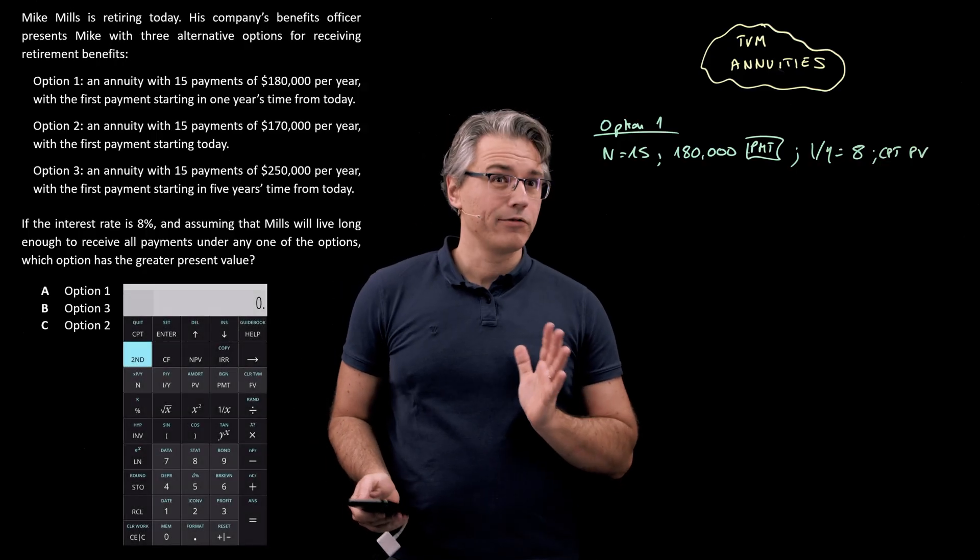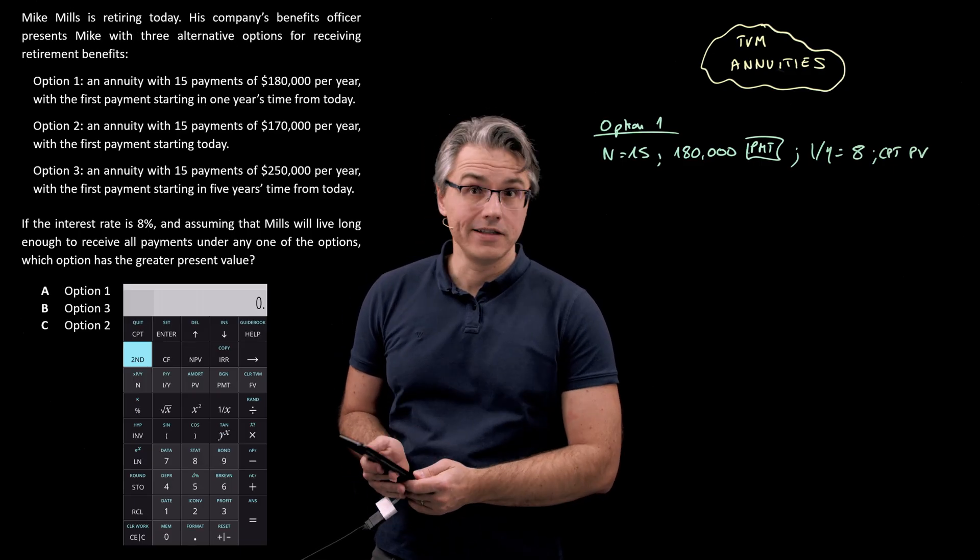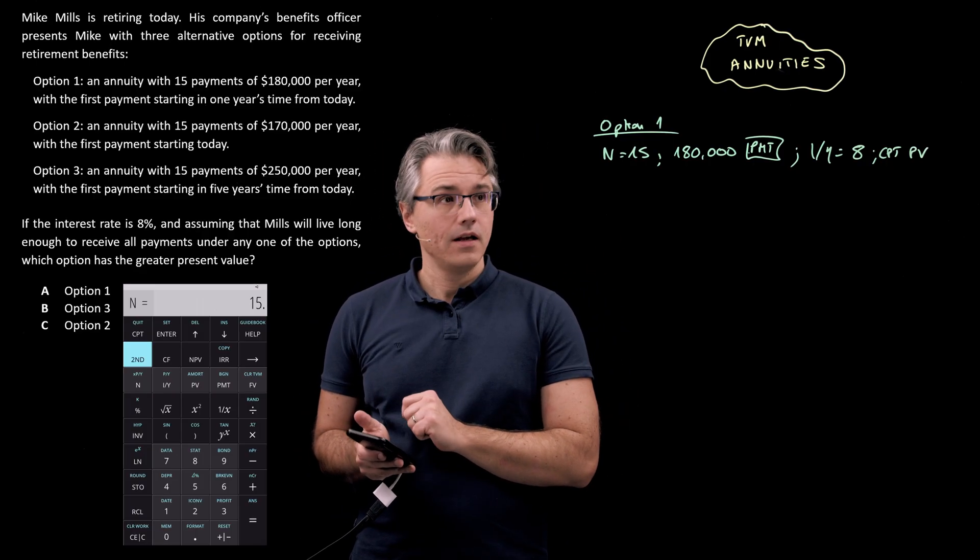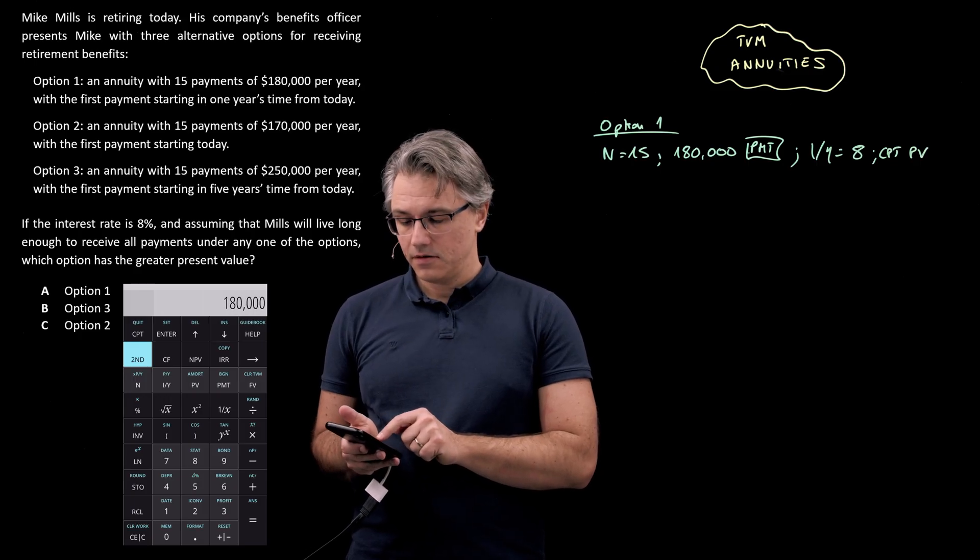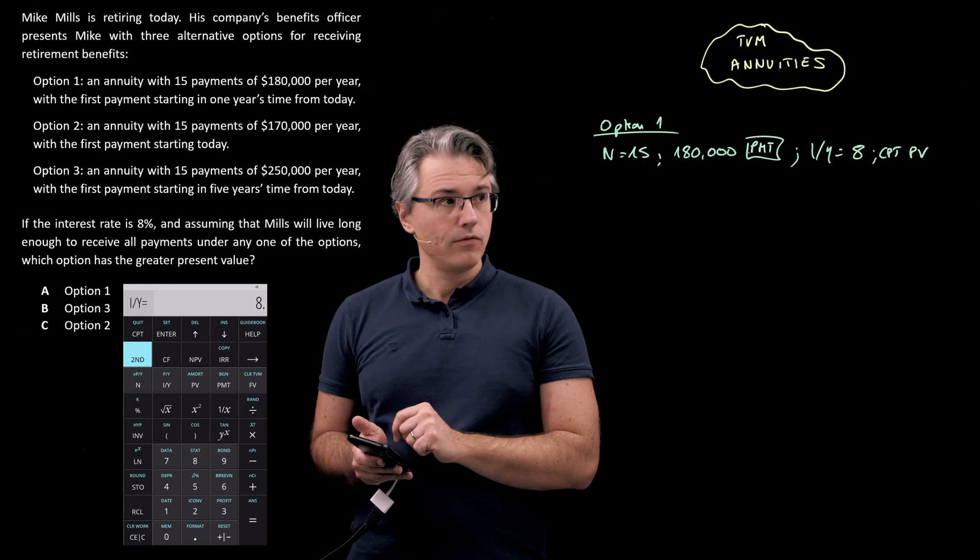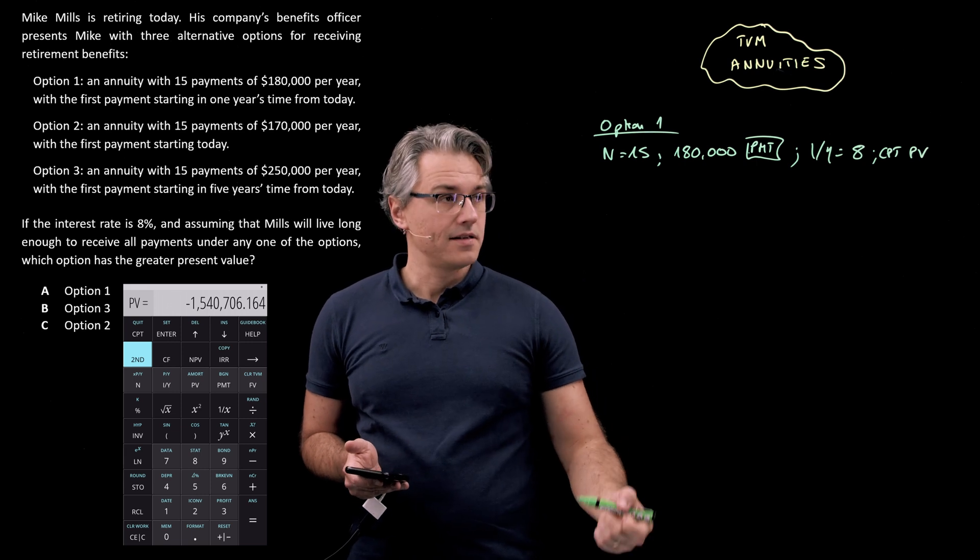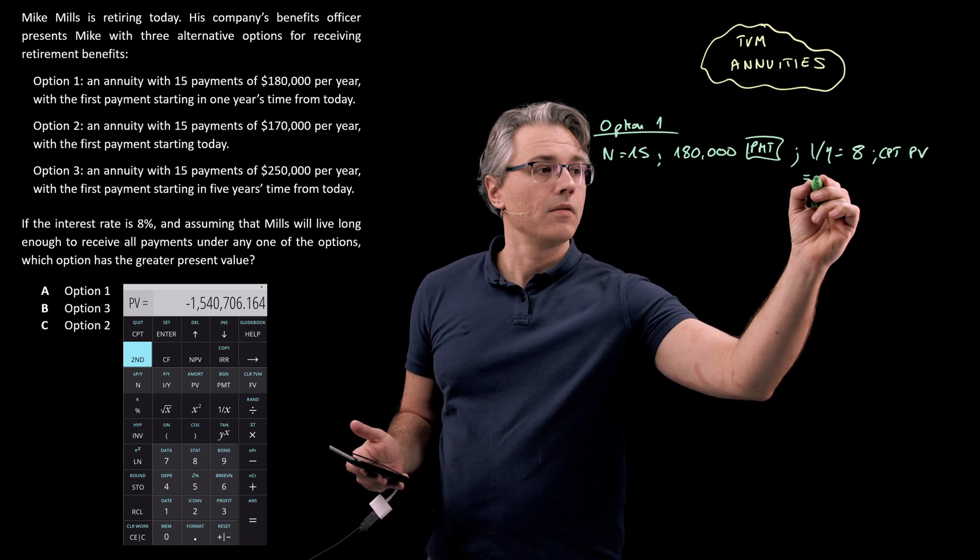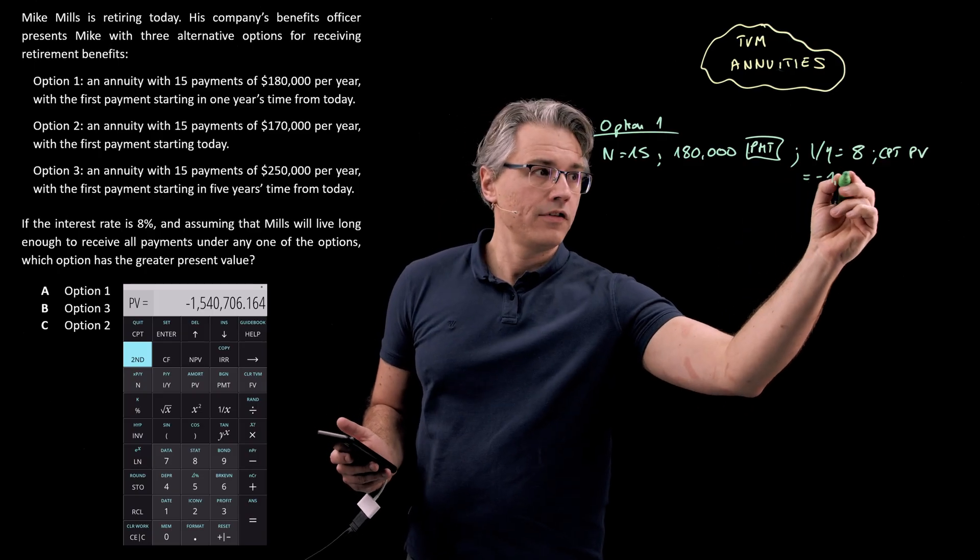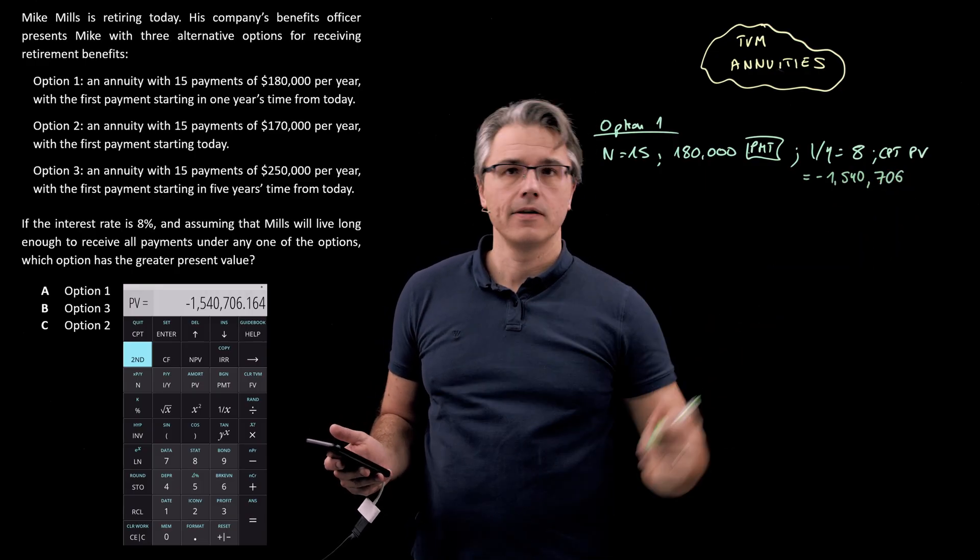Let's have a look at what these inputs on the calculator provide us with. Obviously, very critical to clear the time value of money worksheet first. So press second, followed by FV, which has clear TVM as its secondary function, and let's get the inputs in: 15 for N, 180,000 for PMT, and 8 for I over Y, computing PV. No surprise here, the calculator displays this as a negative figure because the PMTs were positive. So $1,540,706 approximately.